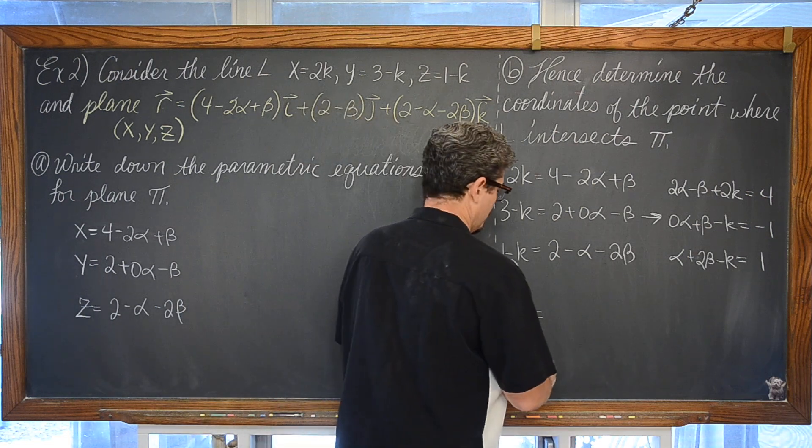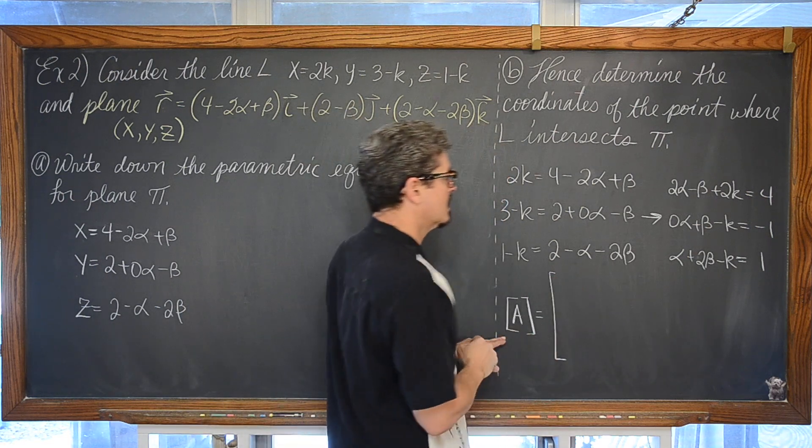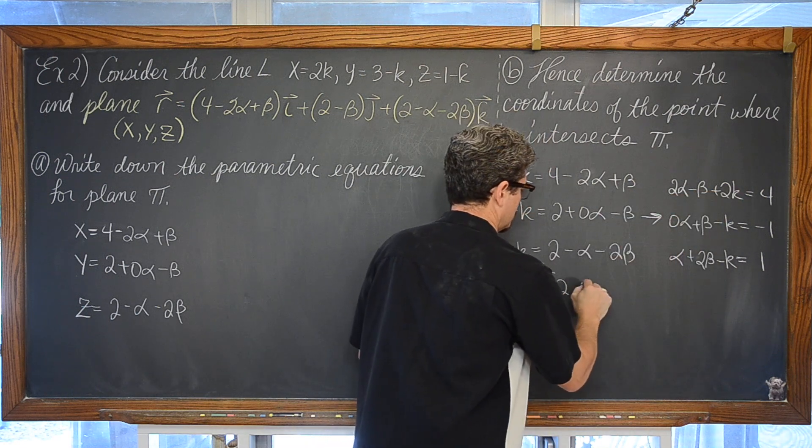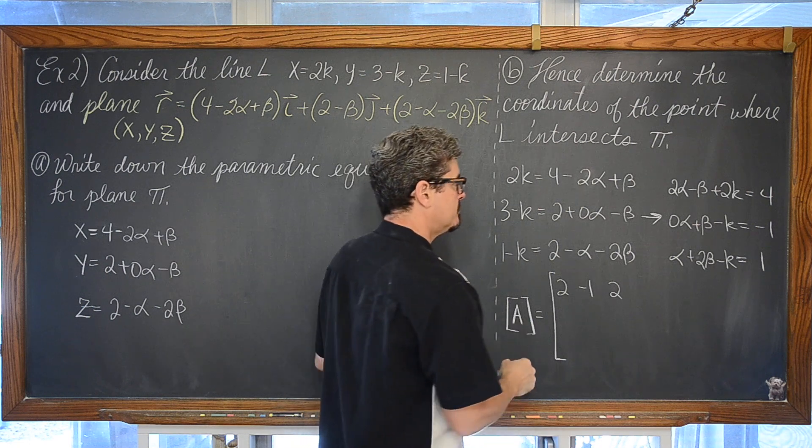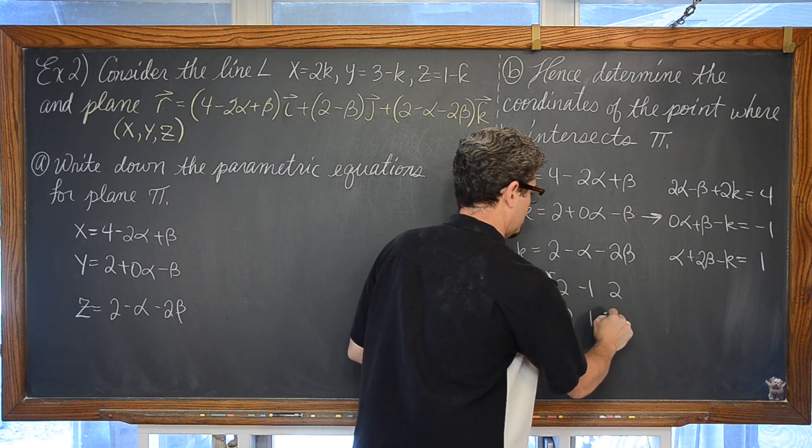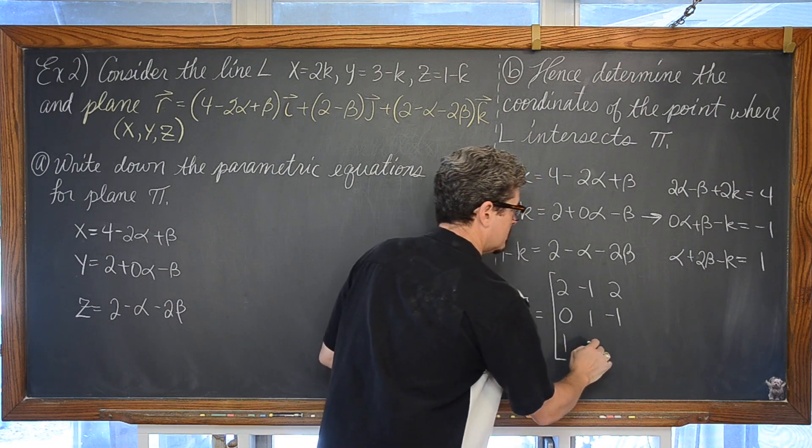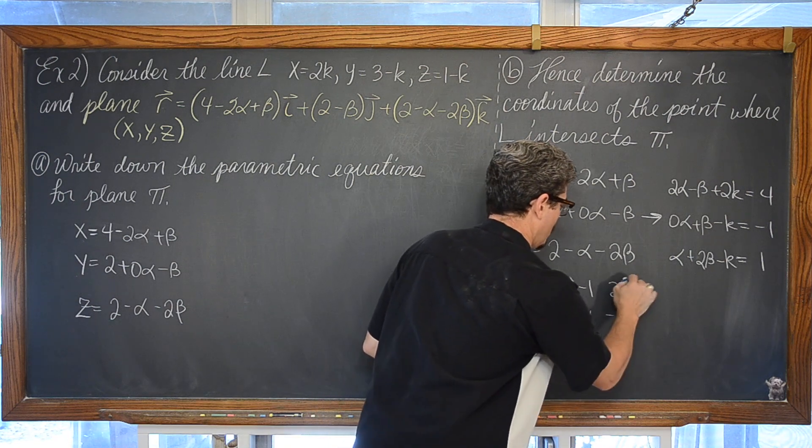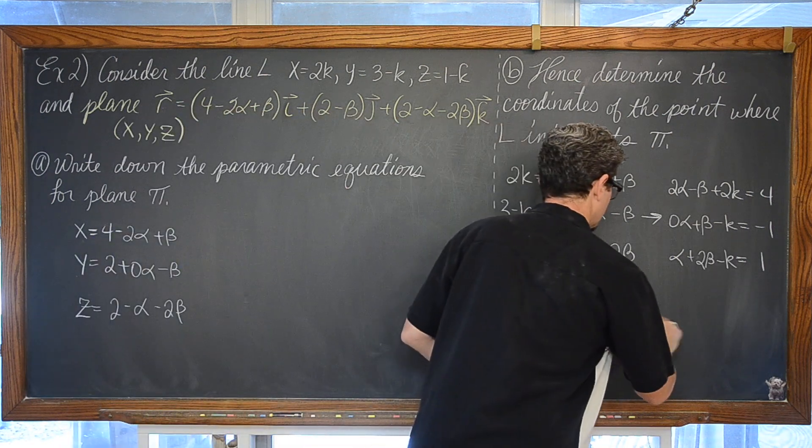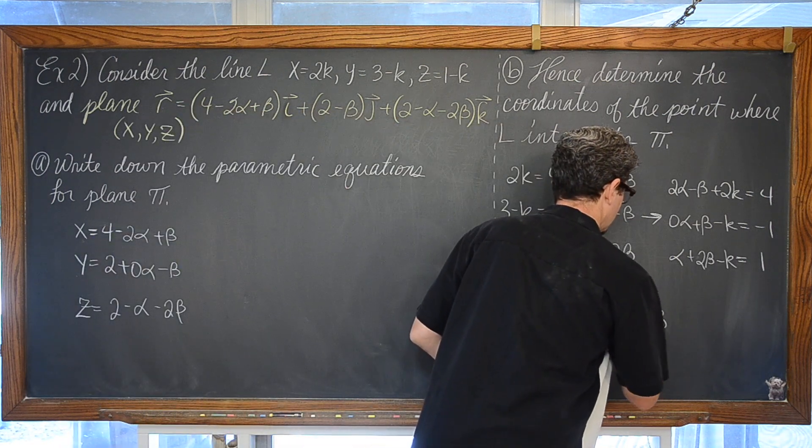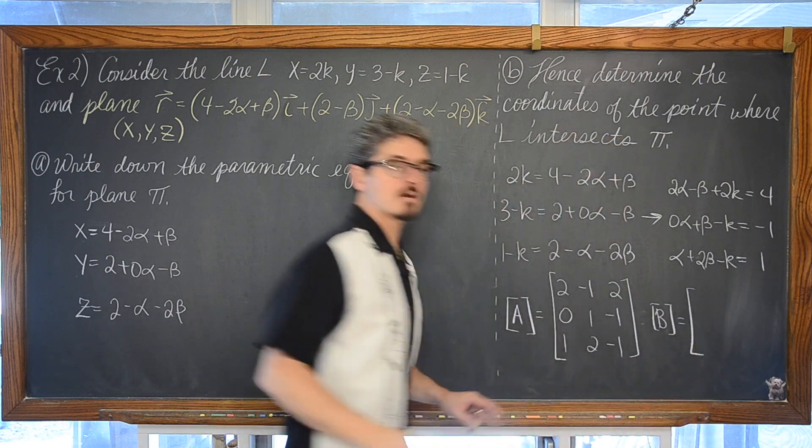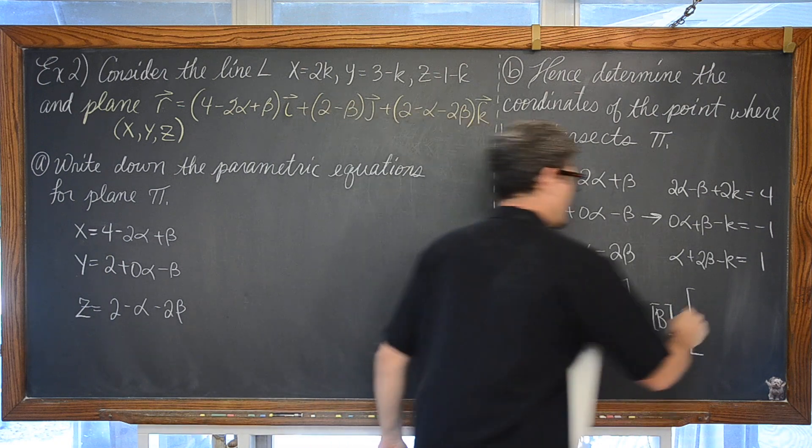We can set up matrix A as being the coefficients of 2, negative 1, 2, and 0, 1, negative 1, 1, 2, and negative 1. And then matrix B is going to be equal to our constants which are 4, negative 1, 1.